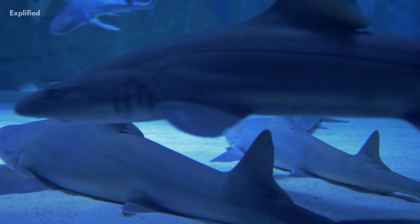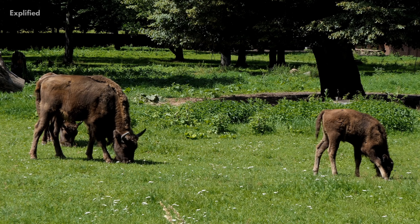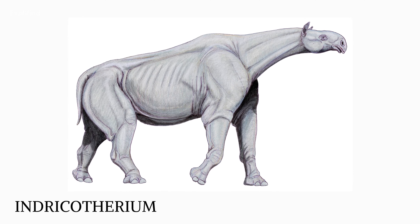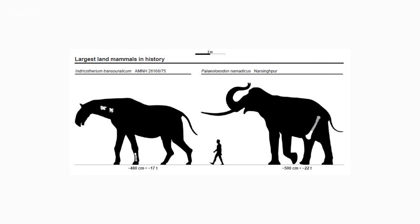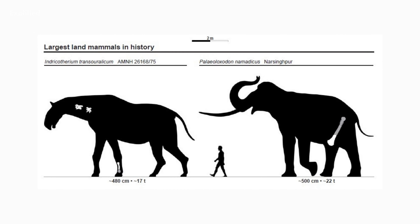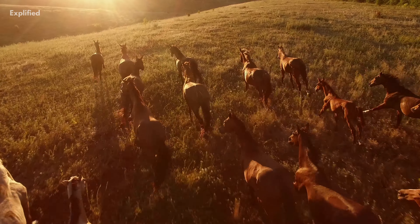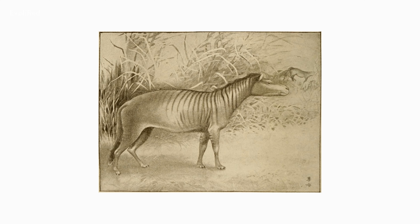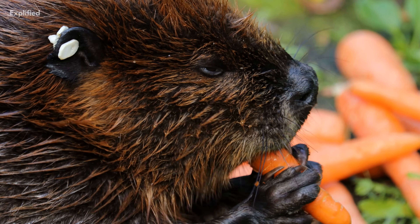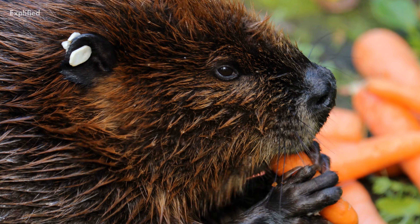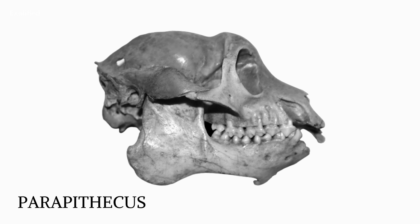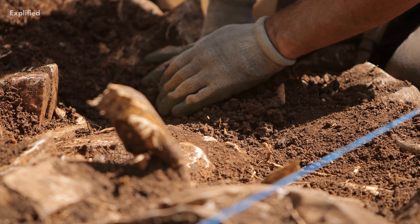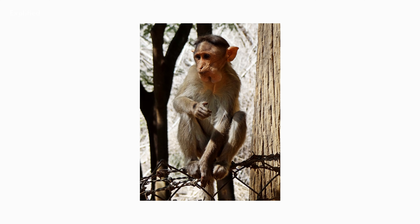Modern predators and herbivores became more diversified and plentiful throughout the period. Indricotherium, a kind of huge hornless rhinoceros, was the world's biggest land animal, and the earliest mastodons were discovered in Egypt. Primitive horses, including three-toed varieties like Mesohippus and Miohippus, were emerging in North America. Late in the Oligocene, primitive beavers also appeared.